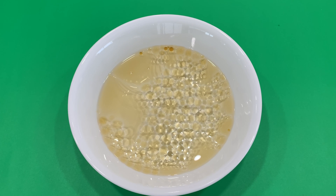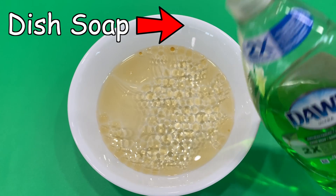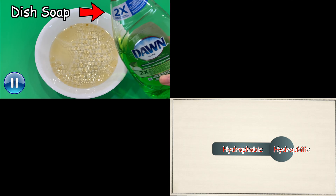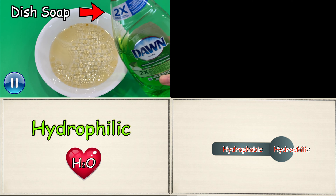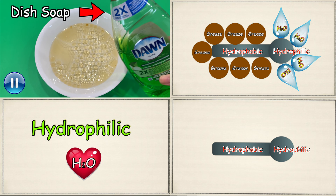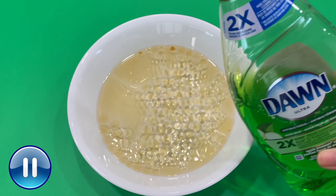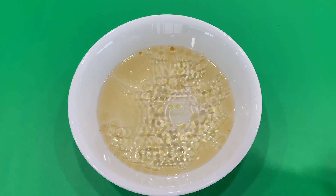Next, if you add one drop of dish detergent, the hydrophilic end of the detergent molecules — recall that hydrophilic means water loving — they attract water molecules and push the oil to the edges of the plate. Ready? Go!